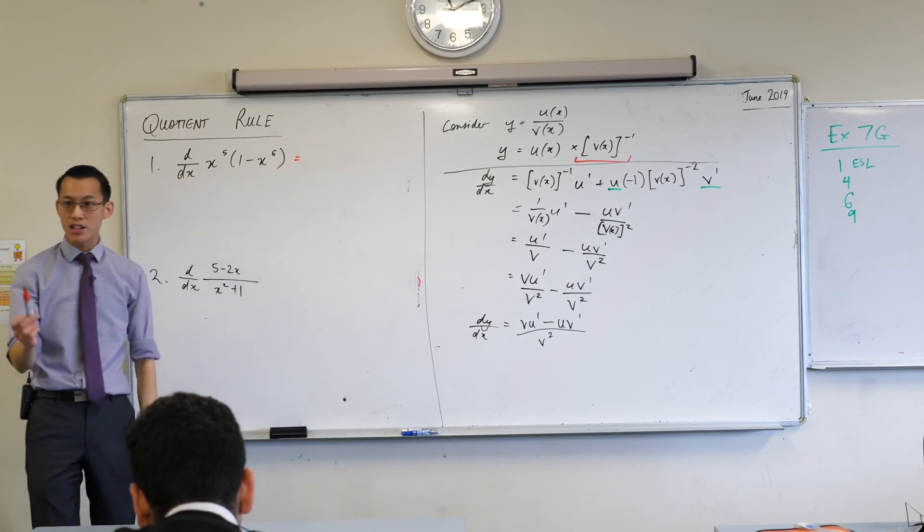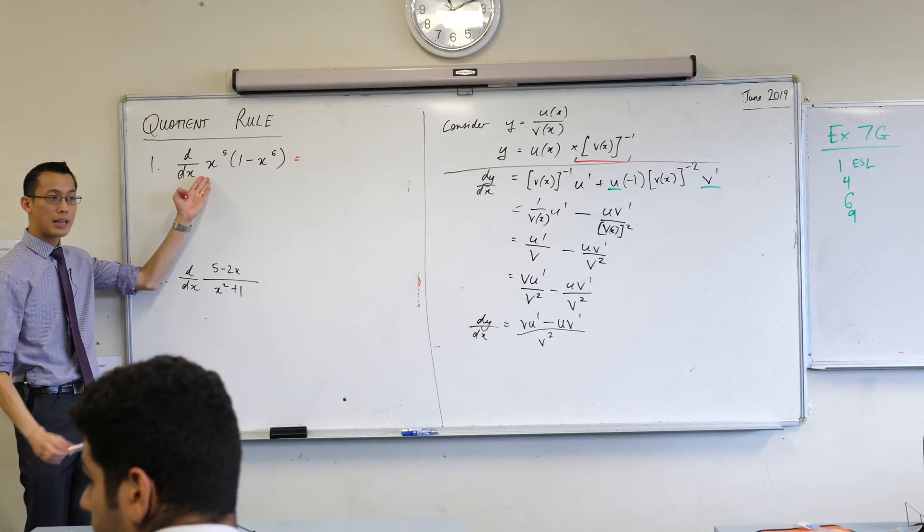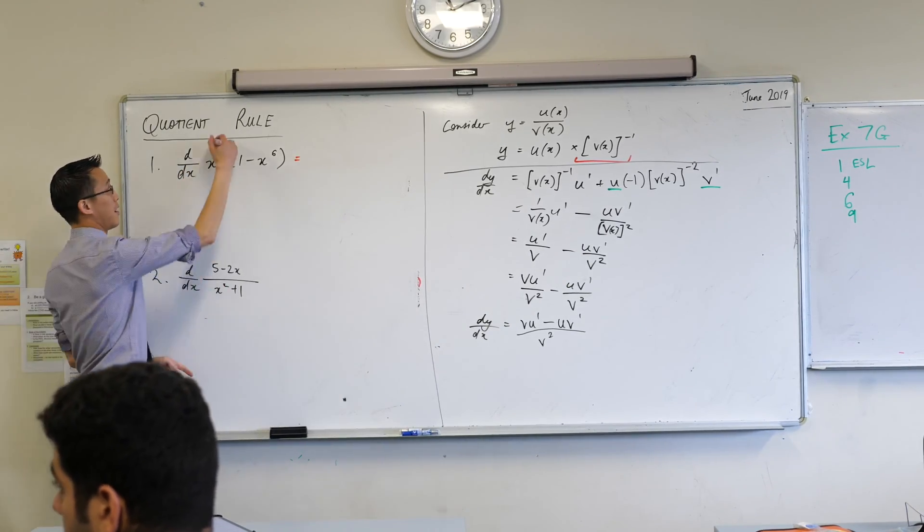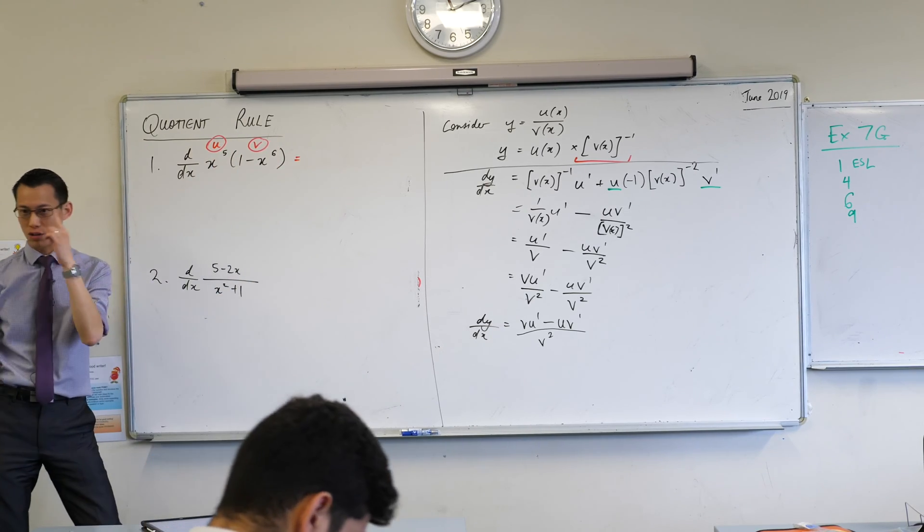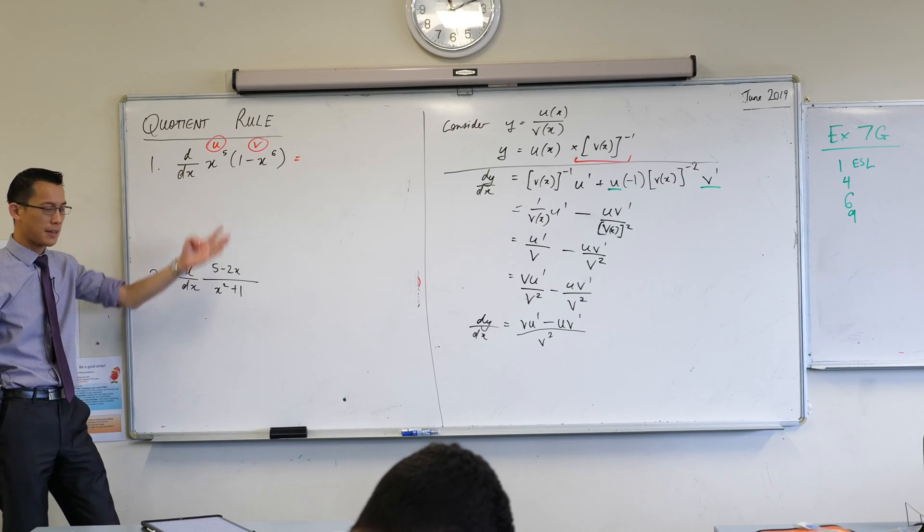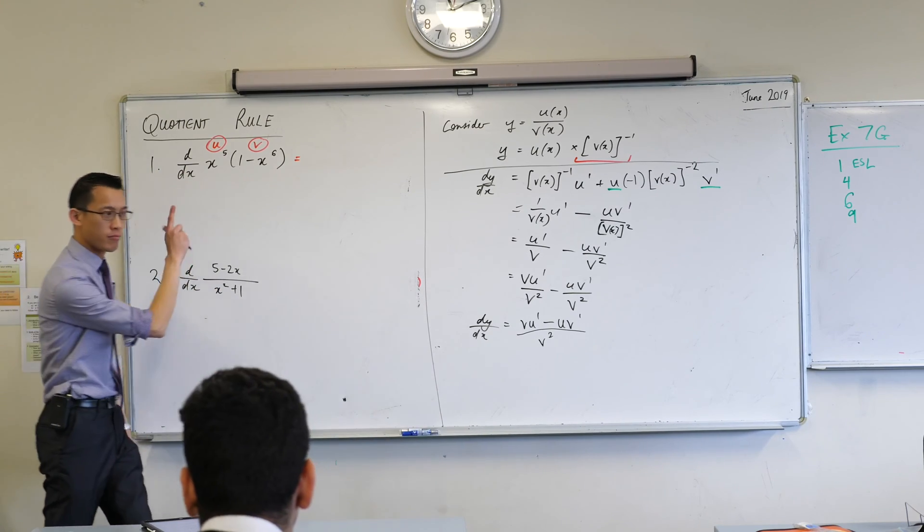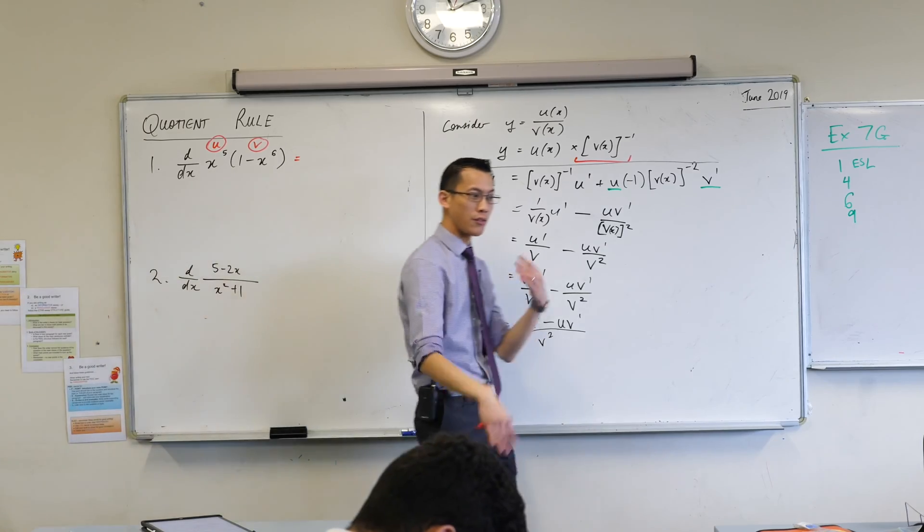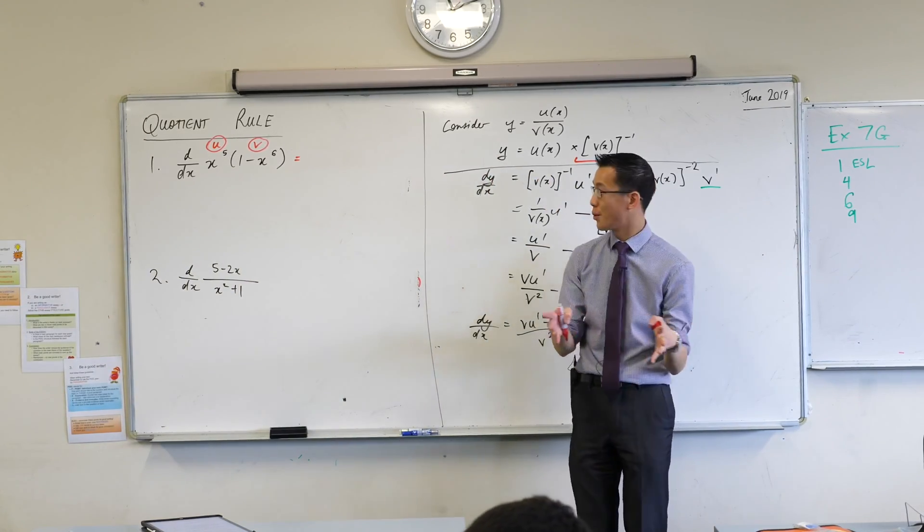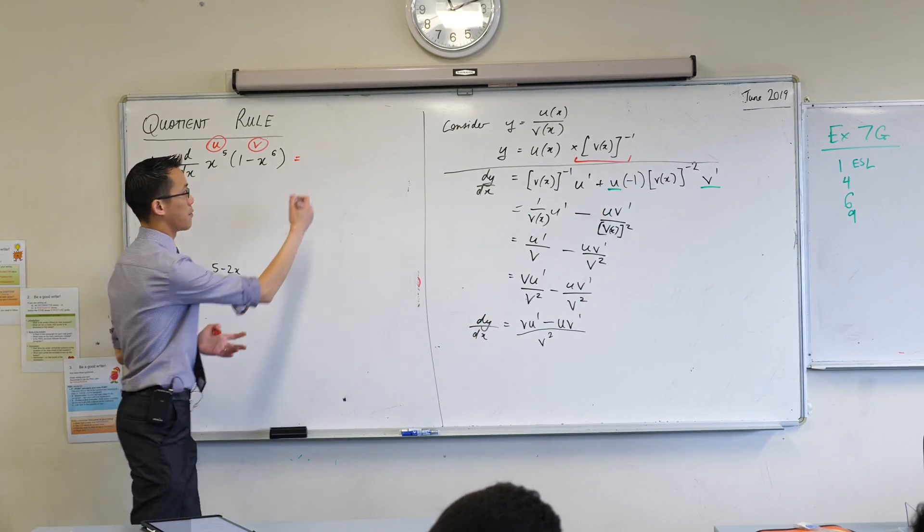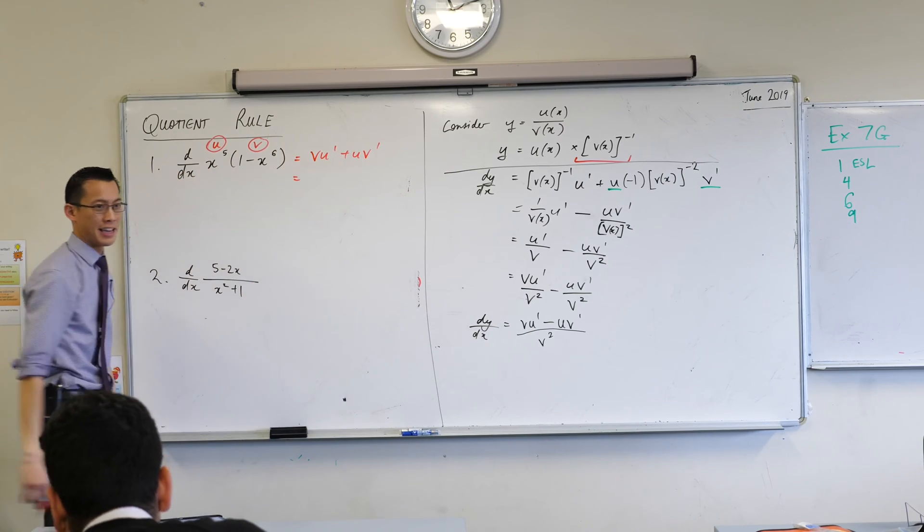I'm going to, and I encourage you to actually do this, like get another color out and then designate one of these to be u and the other one to be v. When it's a product it doesn't really matter which one's which because you could just switch them around and it would still be the same thing, but we'll see this is a bit different with the quotient rule. So here's the product rule, I've got my u and I've got my v.